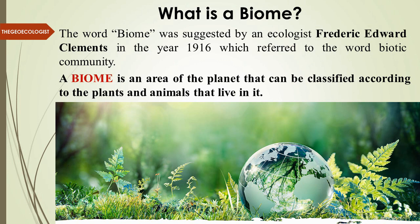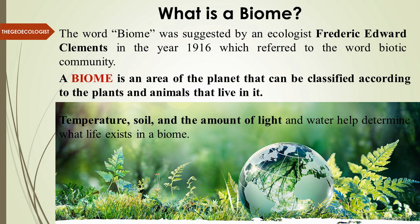A biome is a geographical area of the planet that can be classified according to the plants and animals — that is, flora and fauna — that live in it. It is a particular geographical area on the planet which has a uniqueness of plants and animals. Temperature, soil, amount of light, and water — these are the abiotic components that help determine the life forms in a particular biome. These are the major factors responsible for creation of a particular kind of biome on the Earth's surface.